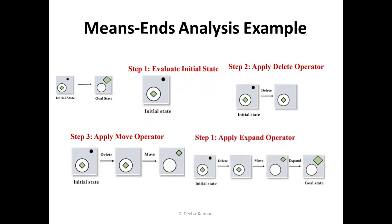When we compare to the goal again, the diamond shape should be expanded, so we apply the expand operation to expand it. Finally, we achieve the goal. Each step we compared with the goal and performed the preferable action: first delete, then move, then expand — reaching the goal state. We tried to reduce the gap between the present state and the goal state. This is a goal-driven problem solving strategy in AI planning. Thank you.